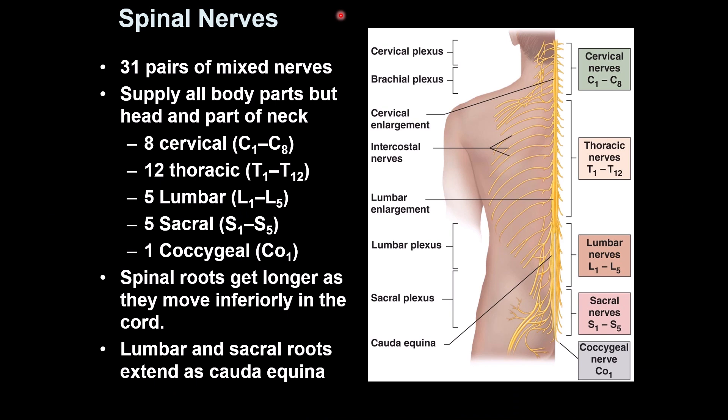We have 31 pairs of spinal nerves and they supply most of the body. There are some areas of the body not supplied by spinal nerves — the face, part of the neck, part of the head — but the other parts of the body are supplied by the spinal nerves. The spinal cord is divided into five different parts.